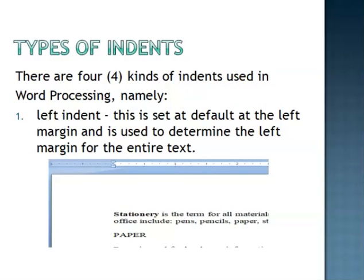There are four kinds of indents used in word processing, namely the left indent. This is set as default at the left margin and is used to determine the left margin of the entire text. Here I have a diagram of how text is aligned on a document using the left indent.